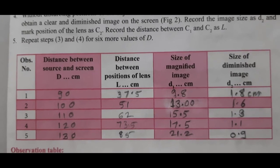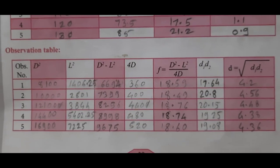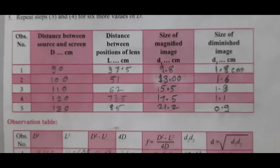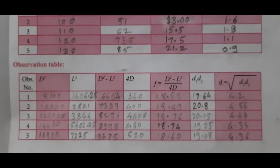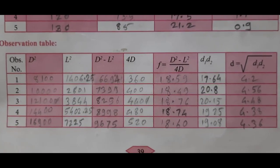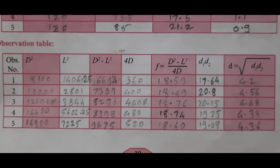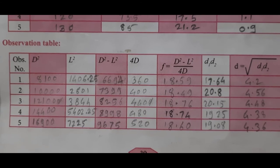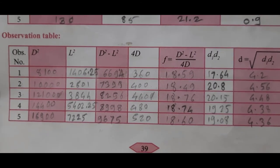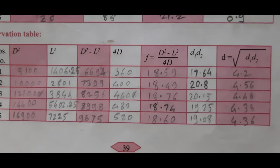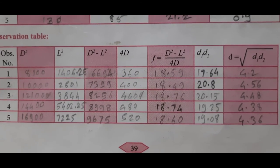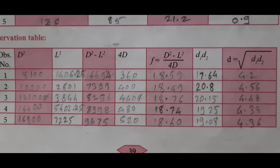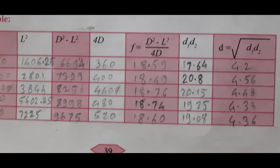Now we move to the calculation table. First, we find D squared — the distance between the source and the screen multiplied by itself. Then L squared — L multiplied by L. The next column is D squared minus L squared, followed by 4 times D. In the final column, we calculate the focal length F using the formula: D squared minus L squared divided by 4D.